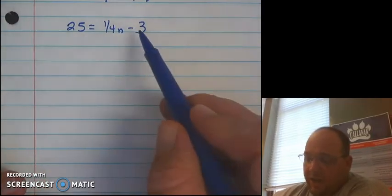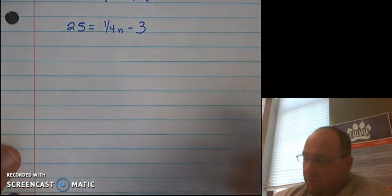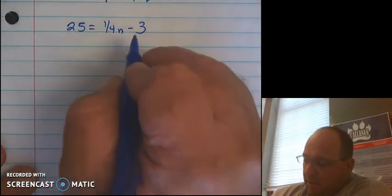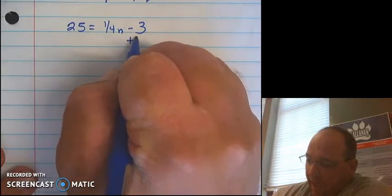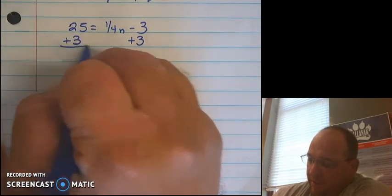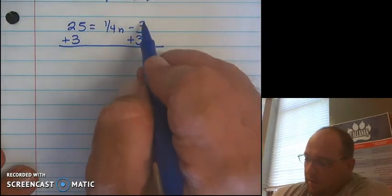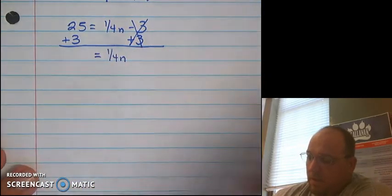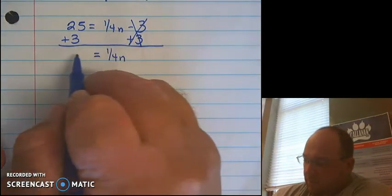So again, just like before, we want to get rid of the subtraction and addition that's occurring in this two-step equation. So I want to get rid of the subtracting 3. I remove the subtracting 3 by doing the inverse of subtracting 3, which is adding 3. I do that to both sides again to keep that balance in that equation. This will cause this minus 3 to cancel out with the plus 3, where it leaves a 1 fourth n equals 25 plus 3 is 28.